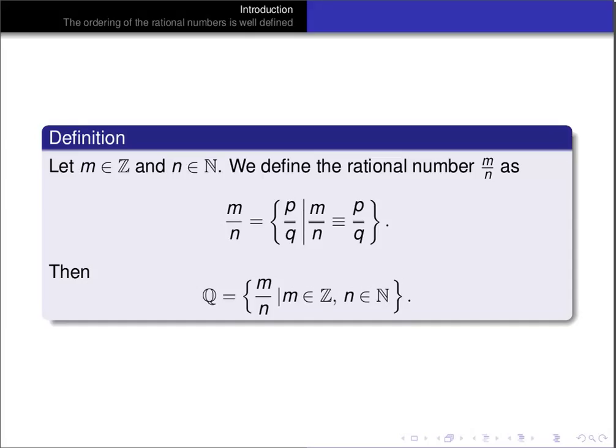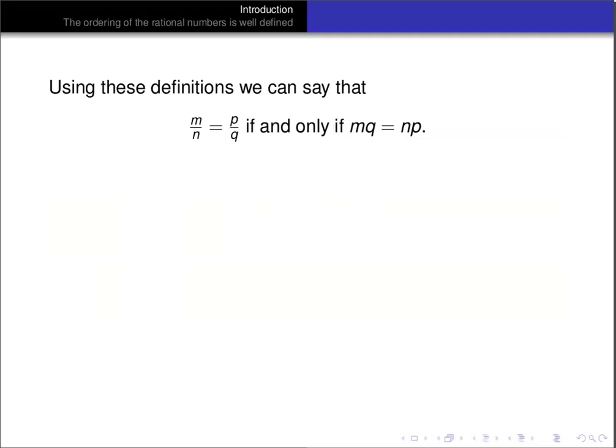So rational numbers are actually infinitely large sets of equivalent fractions. And then of course the rational numbers, thus Q, is just the collection of all rational numbers. With those definitions, we can say that the rational number m over n is equal to the rational number p over q if and only if mq equals np.